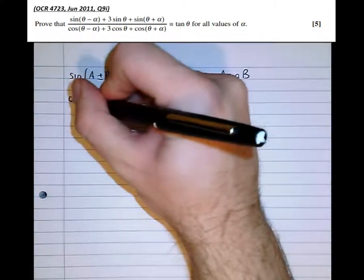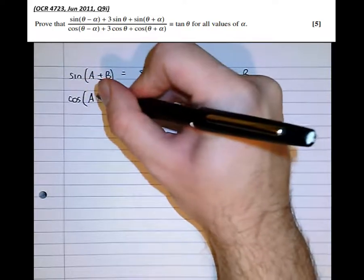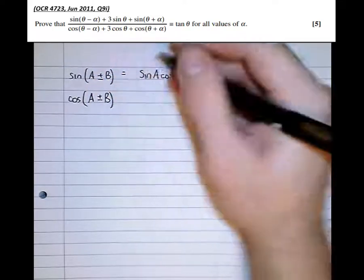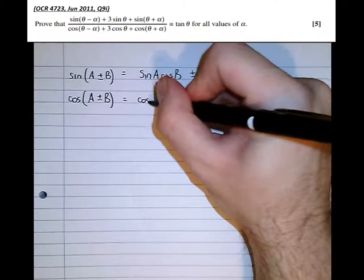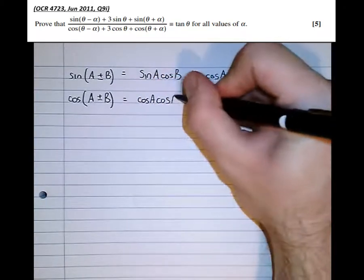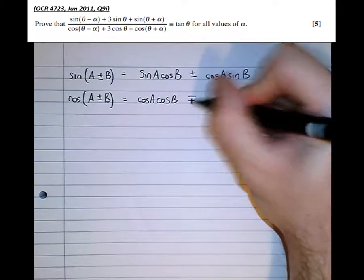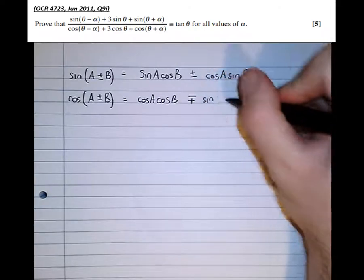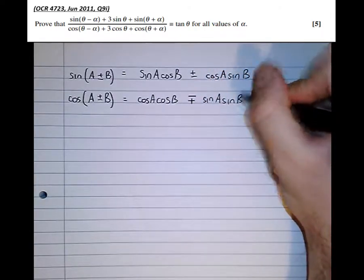For cosine, it's cos a cos b, minus or plus sine a sine b.